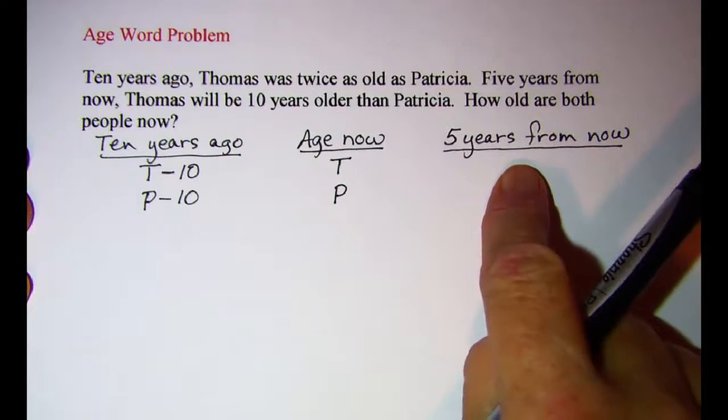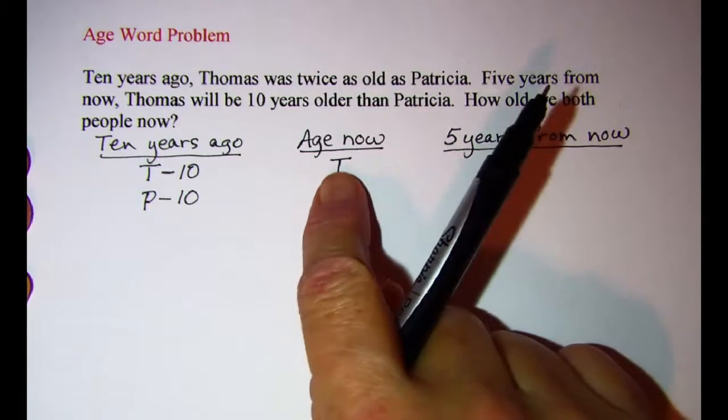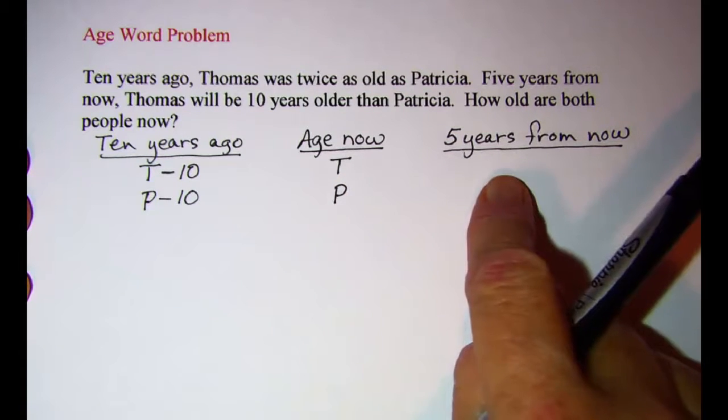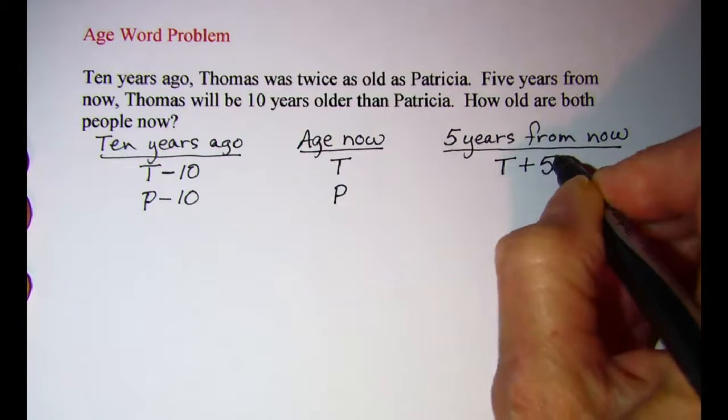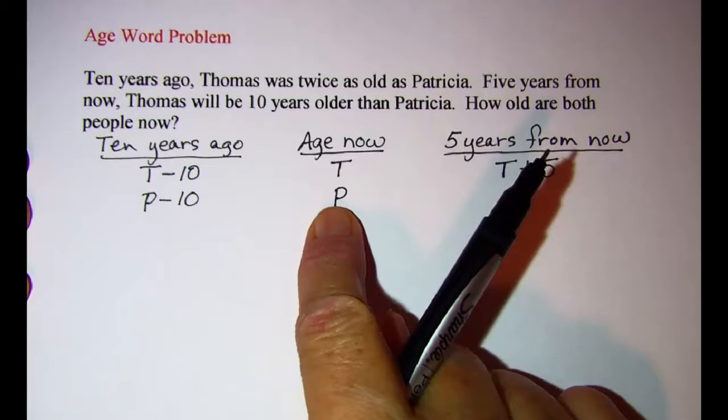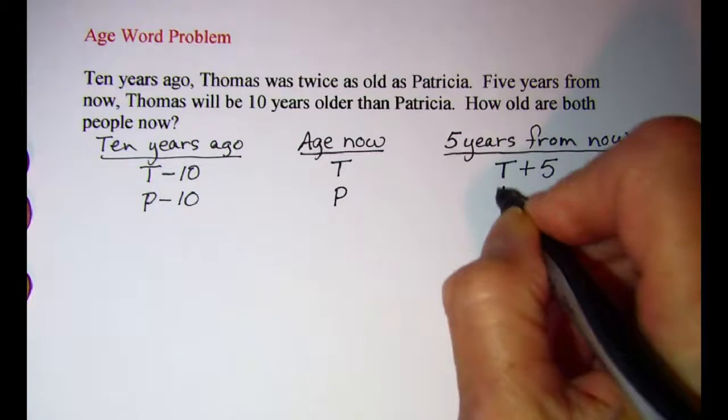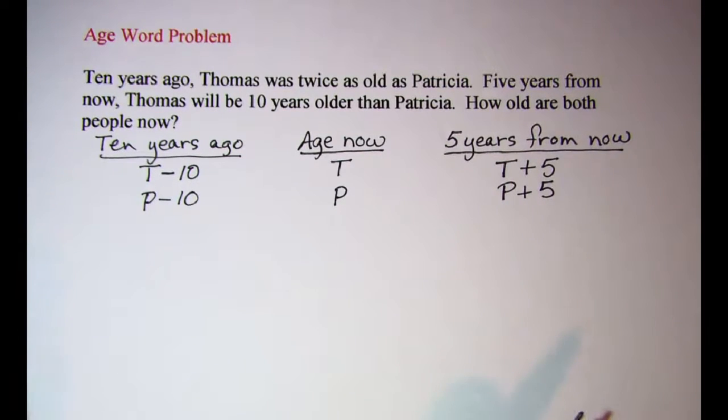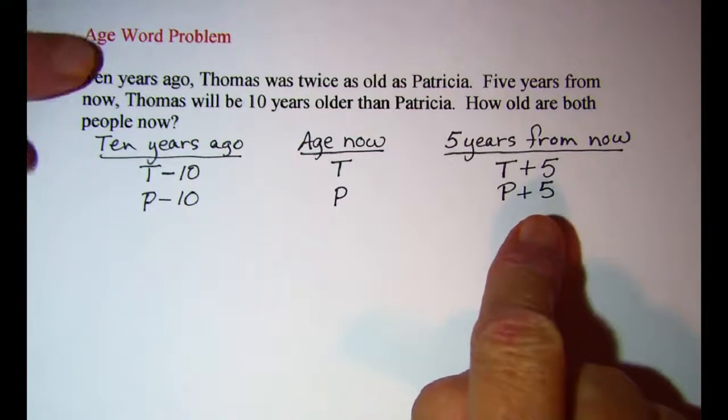Now let me also fill in their ages five years from now. So five years from now, he will be T plus 5. And P is Patricia's age now, so five years from now she will be P plus 5. So now I have the variables ready to translate these two sentences.